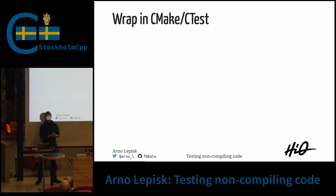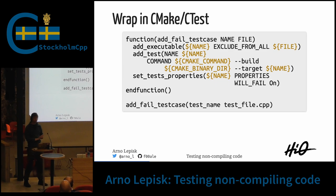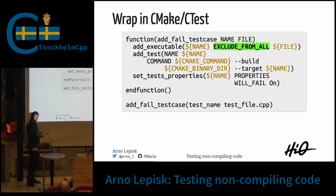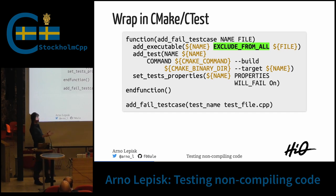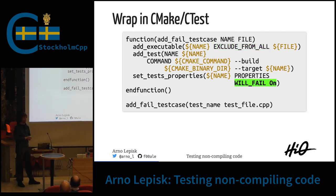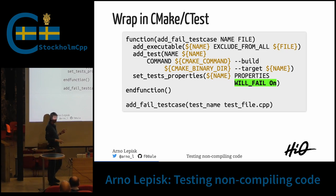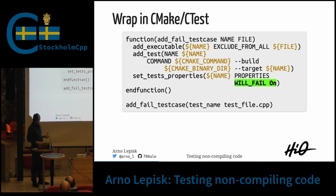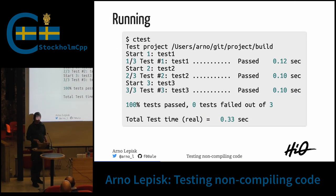We can wrap it in some kind of CMake. I created a small function — this is a wall of text, I know — but the key points are: we add an executable that we don't compile by default, and then we add a test that actually tries to compile it and we set WILL_FAIL to on. This works. I've seen it in use in production code.